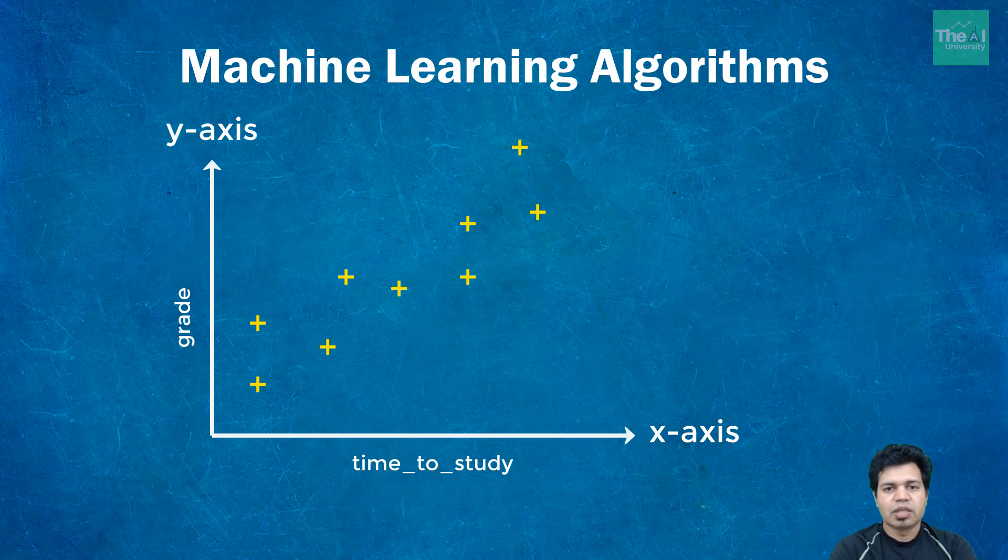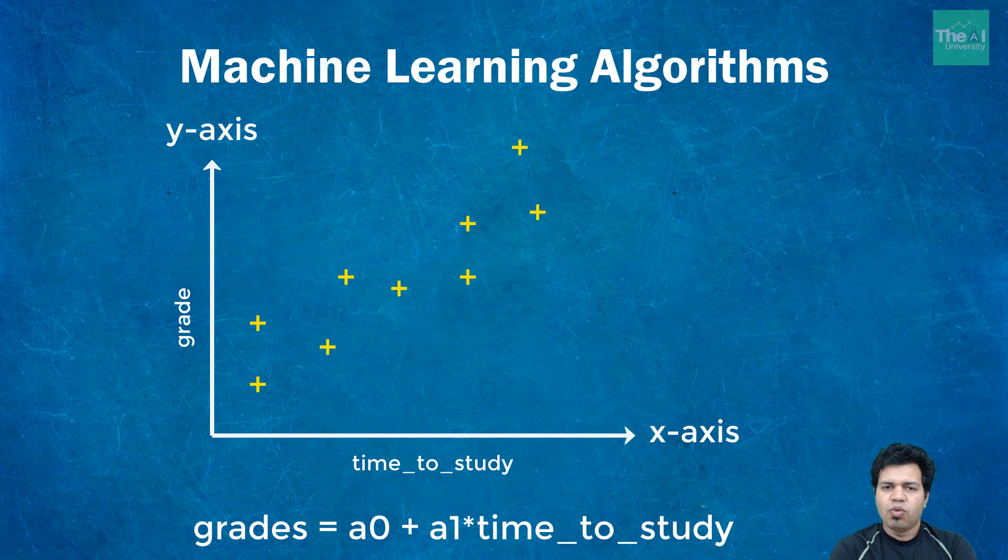So the regression equation representing this relation can be depicted as grades equals to a0 plus a1 into time to study. What this means is that we try to draw a line to this equation that will depict this data in such a way that it should try to best fit this data. It's always hard to best fit a line which will touch all the data points, so you can get a best fit line which can approximate the data.